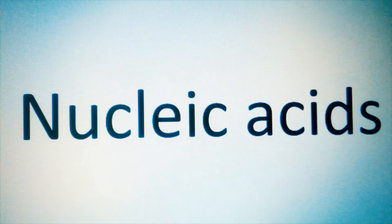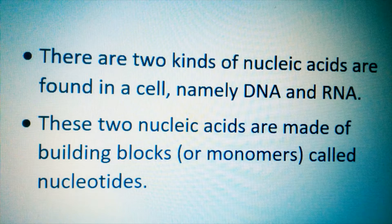In this video we're going to talk about nucleic acids. We're going to look at the types of nucleic acid, the building blocks of nucleic acid, and study the differences between the kinds. There are two kinds of nucleic acid found in a cell: DNA and RNA. These two nucleic acids are made of building blocks called nucleotides.